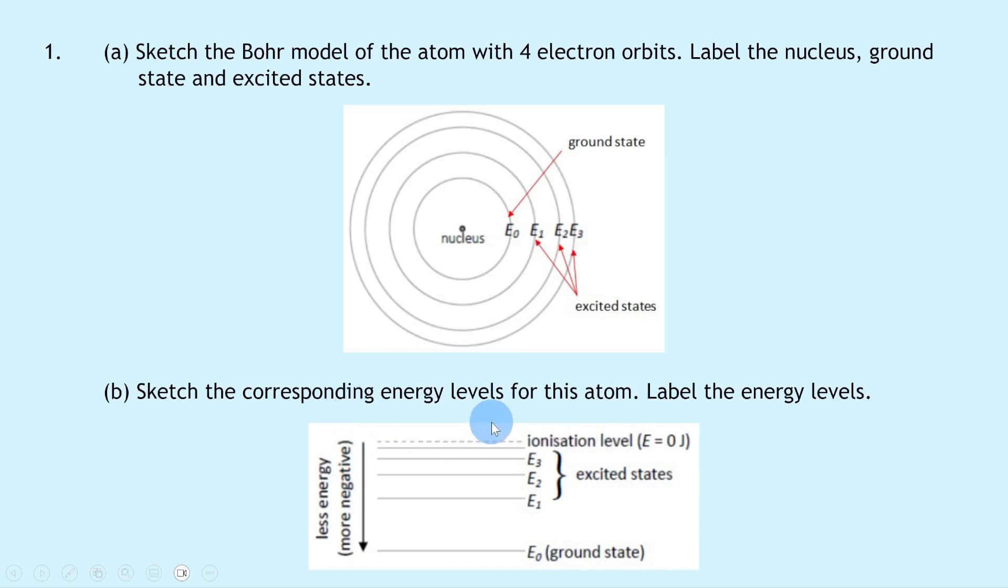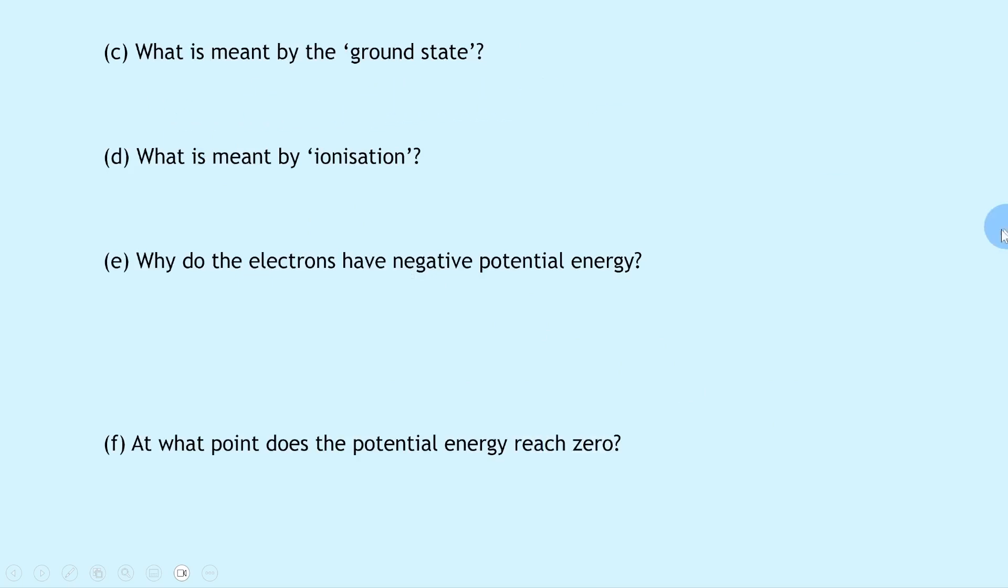On the left hand side, if you want, you can show that the energy levels are getting more negative as you go down. Part C says what is meant by the ground state?